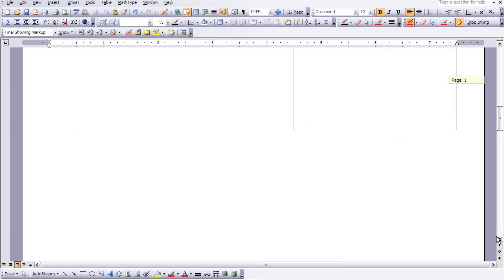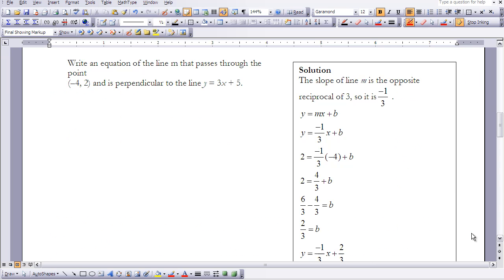Here I have one more example to work through. In this example, we're going to draw on what we know from our lesson in chapter 1, where we were writing equations given a point and given our slope. I want you to write an equation of the line m that passes through the point negative 4, 2 and is perpendicular to the line y equals 3x plus 5. The opposite reciprocal of 3 would be negative 1 third, so the slope of my new line has to be negative 1 third.